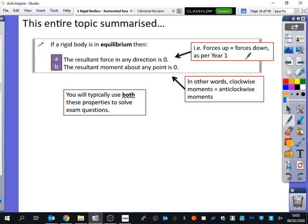Forces up must be equal to forces down, otherwise it's not in equilibrium. But the thing that's new here is that the resultant moment about any point is zero. In other words, the clockwise moments are equal to the anticlockwise moments. And I've said that you will typically use both of these properties to solve exam questions.